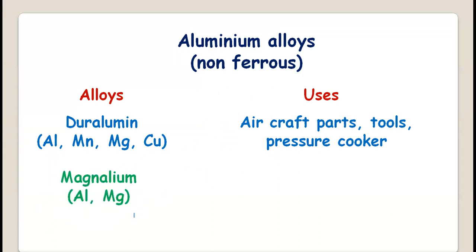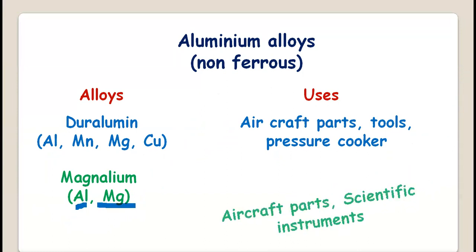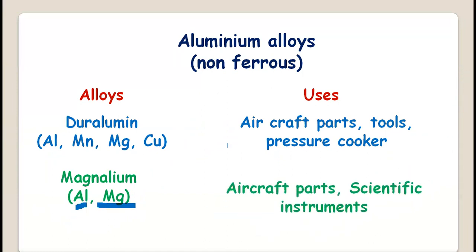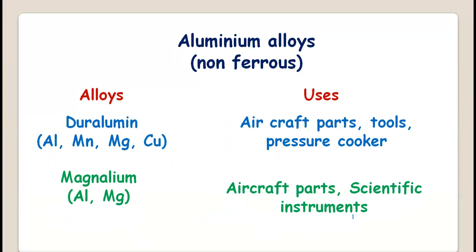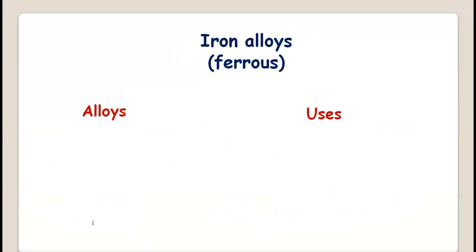The second aluminium alloy is Magnalium. Magnalium is an alloy of aluminium and magnesium. It is also used for making aircraft parts and scientific instruments. So these are all the applications of aluminium alloys.